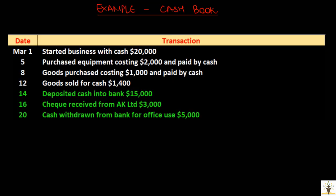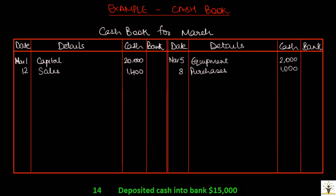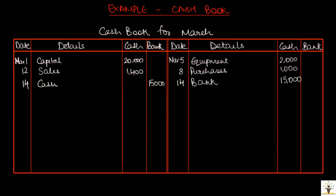On March 14, deposited cash into bank $15,000. This is a contra-entry because bank balance is increasing and cash is decreasing. Hence, entry will be recorded on both sides of the cashbook. The rule for contra-entry is: always record the amount column first and then the details column. Since bank balance is increasing, go to the debit side of the cashbook and record the amount in the bank column. And since it is a payment for cash, entry will be made on the credit side of the cash column. A 'C' mark is put in the details column to identify that this is the contra-entry.